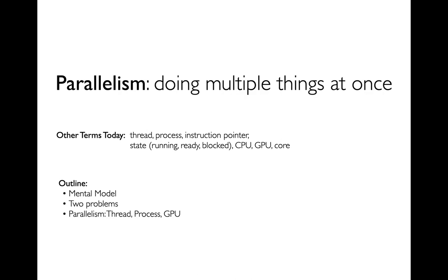To start, I want to build a mental model about how processes normally run on a CPU. Then I'm going to show you two problems that can crop up when running code — these have to do with wasting compute resources — and then show how we can solve those with parallelism. There are three kinds: thread parallelism, process parallelism, and GPU parallelism. We'll introduce thread parallelism but not go into detail, as that could fill a whole semester. We'll focus more on multiple processes and GPU usage.